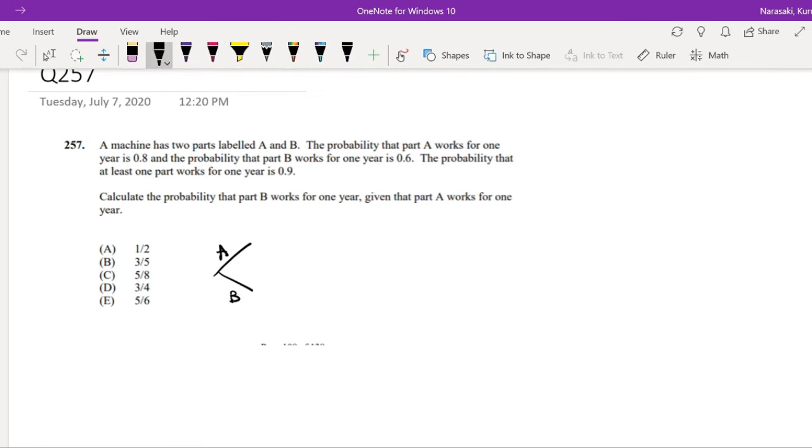The probability that part A works for one year is 0.8, and the probability that part B works for one year is 0.6. The probability that at least one part works for one year is 0.9.